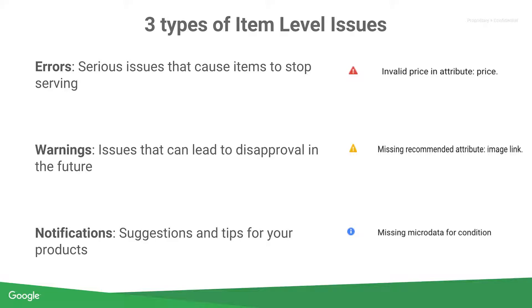In terms of prioritization, always look to solve the errors first, as they prevent your products from serving. Now that we know how to identify these issues, let's talk about some common item level issues and how they can be fixed.